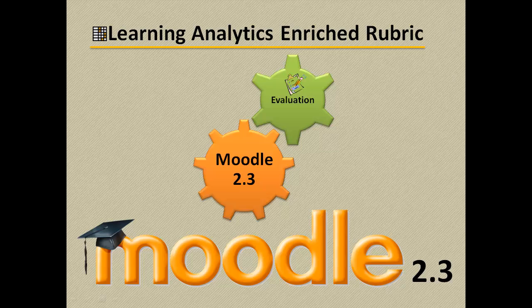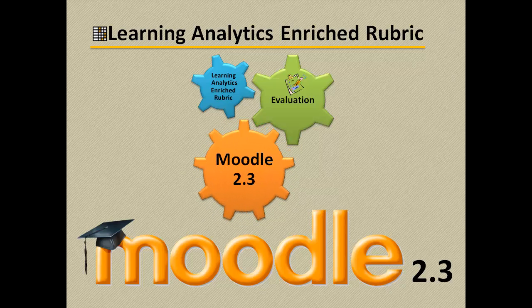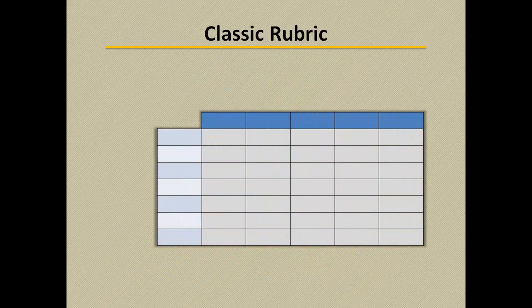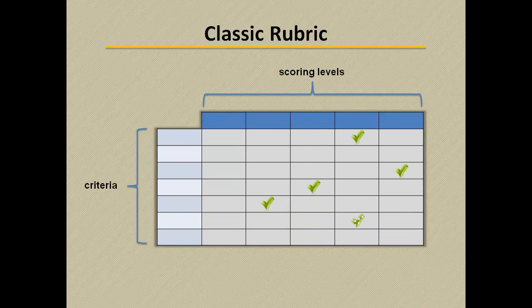The Learning Analytics Enriched Rubric is a new plugin developed for Moodle version 2.3. This plugin implements a new advanced grading method used for student evaluation. Its basic design and functionality comes from the standard rubric grading method, which uses a standardized set of criteria consisting of certain scoring levels created to indicate the degree to which a standard has been met.